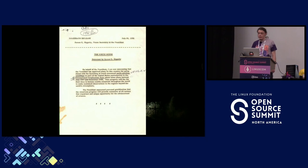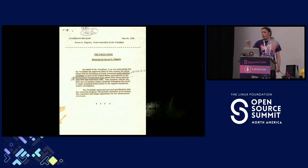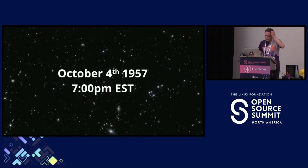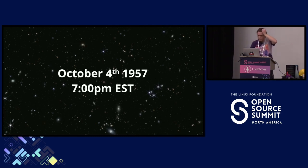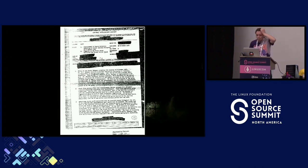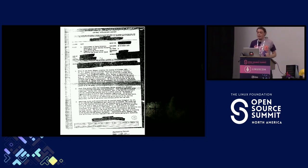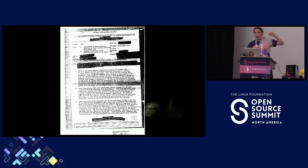The ICSU rubber-stamped it in October of 1951 to happen in 1957 to 1958, because it takes six years to organize these things. In the latter half of 1952, it got rebranded as the International Geophysical Year, or IGY. On July 29th of 1955, James E. Hagerty, the press secretary to the Eisenhower administration, announced that America was going to participate in the IGY by launching a satellite — or multiple satellites. And a few years later, on October 4th of 1957, at approximately 7 p.m., Lloyd Berkner was standing at a cocktail party for the IGY and satellite conference at the Soviet embassy in Washington, D.C.